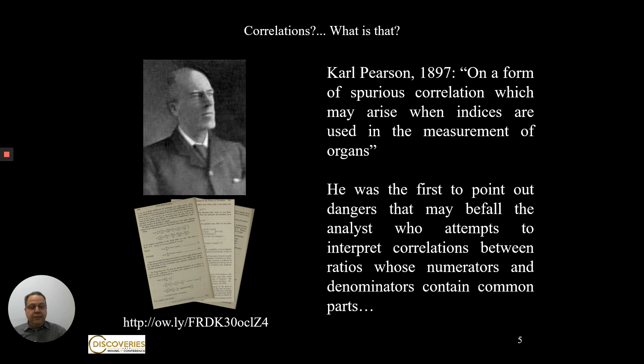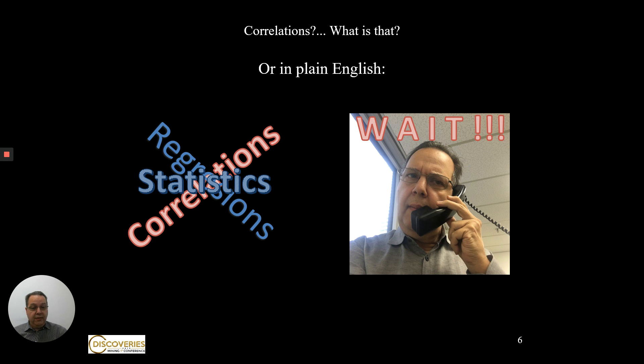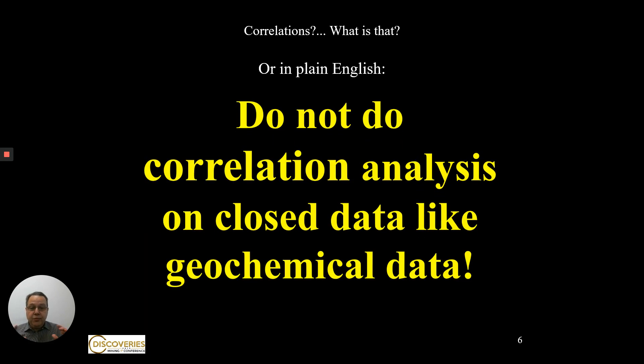They said, well, this guy Karl Pearson who invented the correlation analysis. This is really interesting that the guy that wrote and discovered the method advised that there were problems when you were trying to apply correlation to closed systems. A closed system is a system where the data has been estimated on the basis of something, like parts per million or percentage.